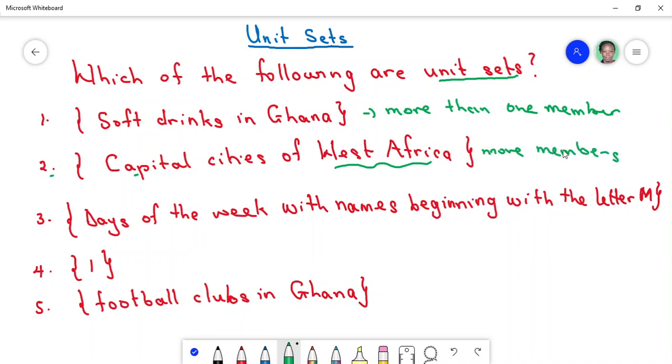Now let's take the set: days of the week. How many days of the week do we have? Yes, seven. Seven, that is good! With names beginning with the letter M. So we have Monday, which starts with M.